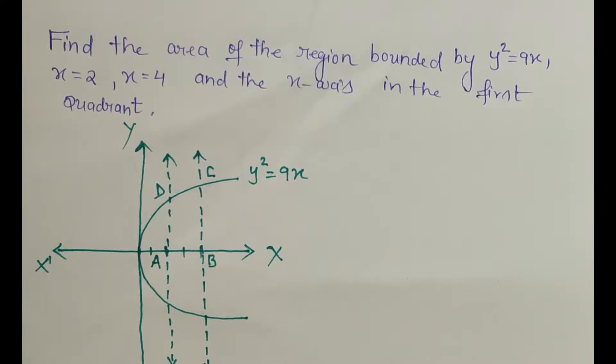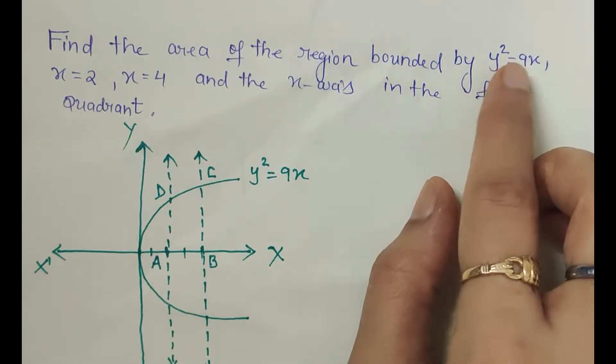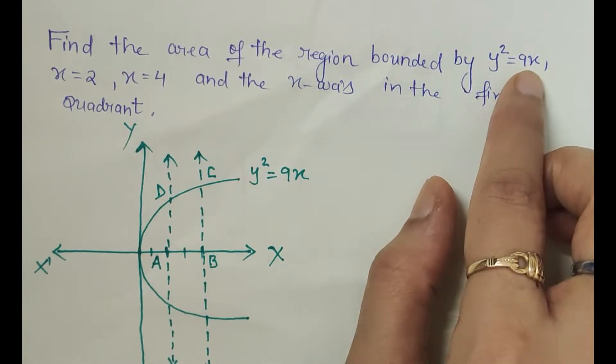Hello friends, in this video I am going to explain how to find area of the region bounded by y² = 9x, x = 2, x = 4, and the x-axis in the first quadrant. Now y² = 9x is the equation of a parabola.